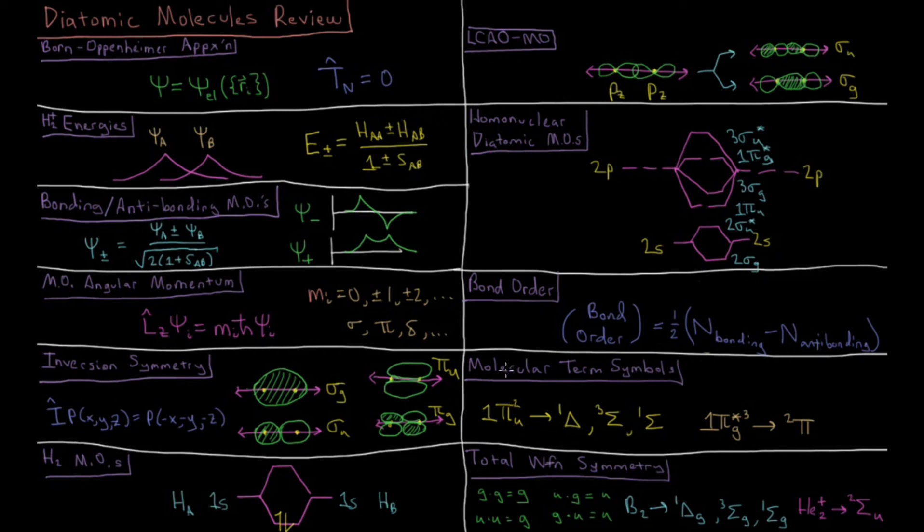And then just as we did for atoms, we can classify electronic states for molecules using term symbols, and instead of having a capital alphabetic letter for the angular momentum, we now have capital Greek letters as our individual orbitals were classified as sigma, pi, delta, etc.